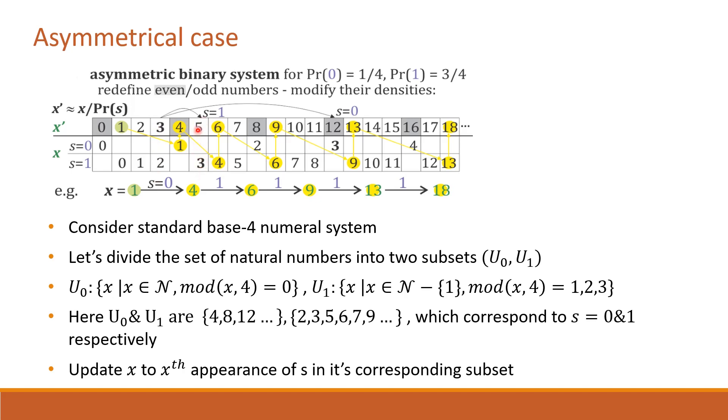Let's now see what result this encoding will produce for the same sequence 011111. As usual, we start with initial state x equal to 1. Then on encountering the first bit 0, 1 is encoded to first appearance of 0, that is 4 in this case. So x equal to 1 is updated to x equal to 4.